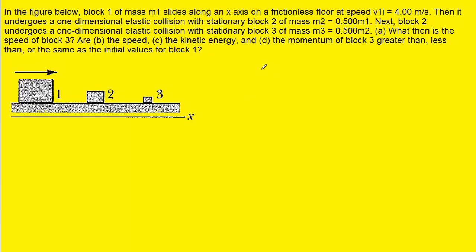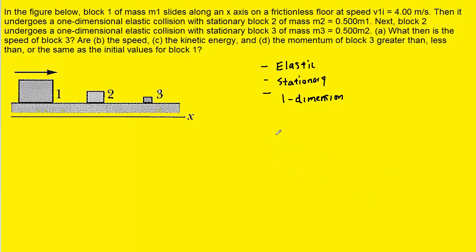We also note that three very special conditions are satisfied in this question. Number one, the collisions are stated to be elastic. Number two, the targets of these collisions are stationary. And finally, number three, these collisions are occurring in one dimension. When these three conditions are satisfied, we can use the conservation of momentum as well as the conservation of kinetic energy to come up with the following equation.